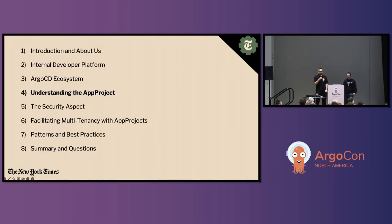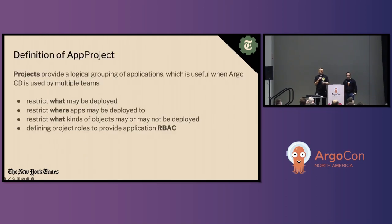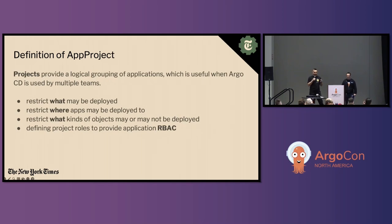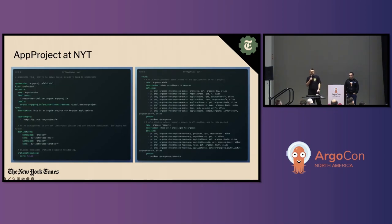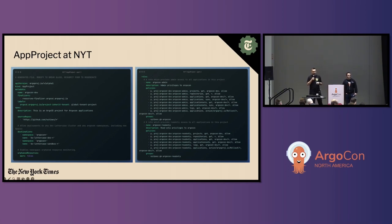The app project is a CRD that is installed to a cluster during the regular Argo CD installation process. The project focuses on categorizing your applications and putting safeguards around them. You can limit four main things in your app project: restrict what can be deployed, restrict where those things can be deployed, what kind of objects might be deployed inside the application, and set up RBAC policies to limit who can perform certain actions inside the Argo CD UI or API. At this slide, you can see the YAML definition of one of the app projects — generated specifically for ArgoCon, but identical to other projects we have in production and dev environments.